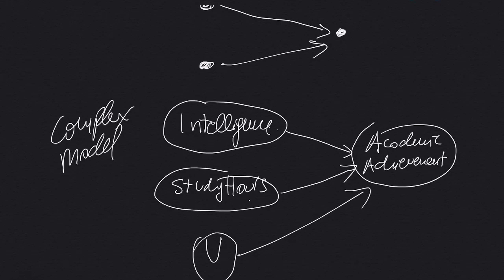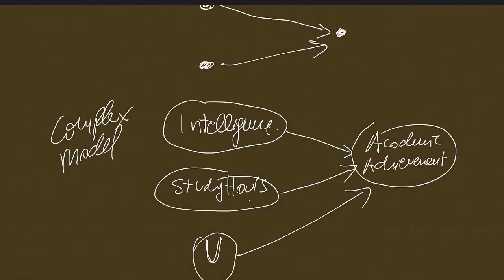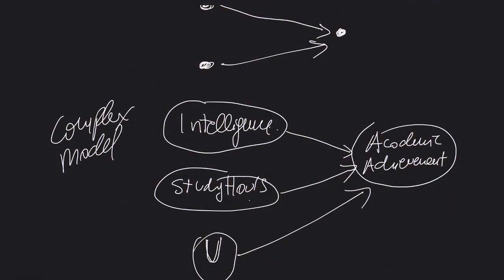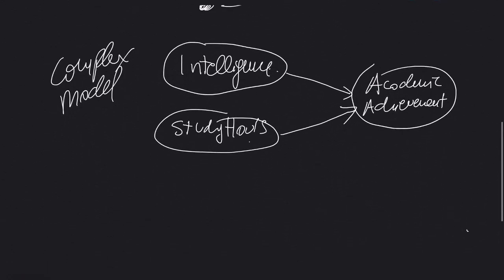Now, for the purpose of the assignment, we are not going to use the U as a representation of unknown variables. So we just delete this. We are not using that for the assignment. Okay, so now this is your complex model.